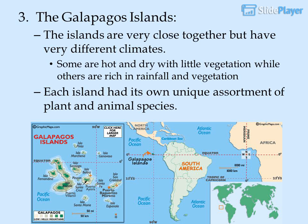Some of those fossils resembled organisms that were still alive; others looked completely unlike any creature he had ever seen. The Galapagos Islands are very close together but have very different climates — some are hot and dry with little vegetation, while others are rich in rainfall and vegetation.